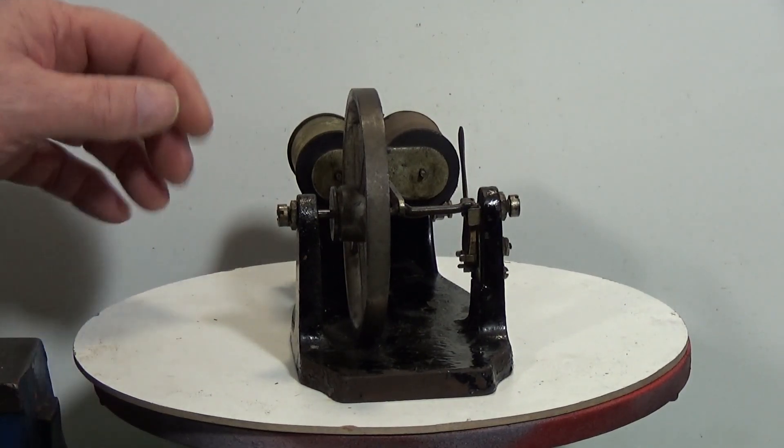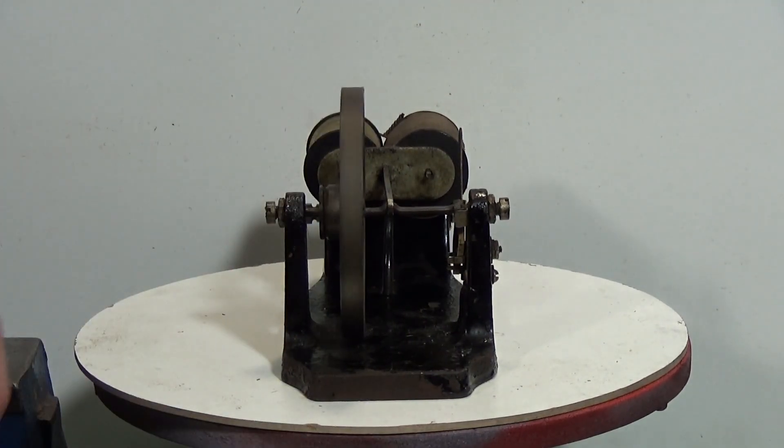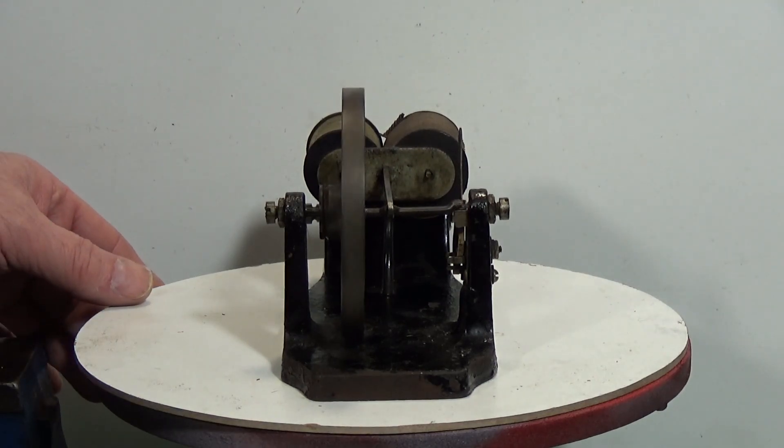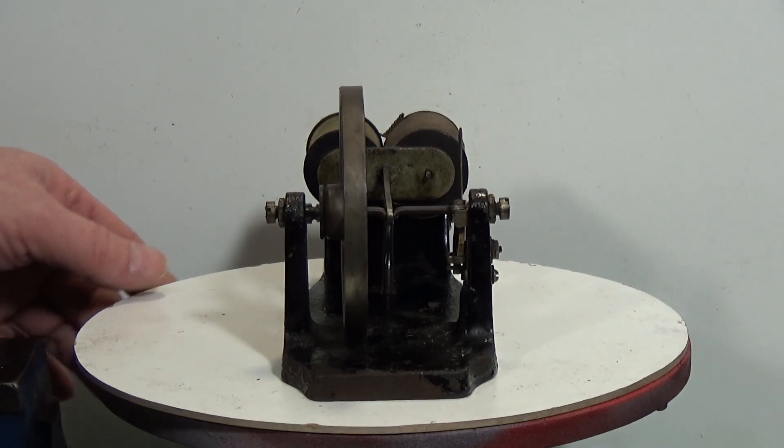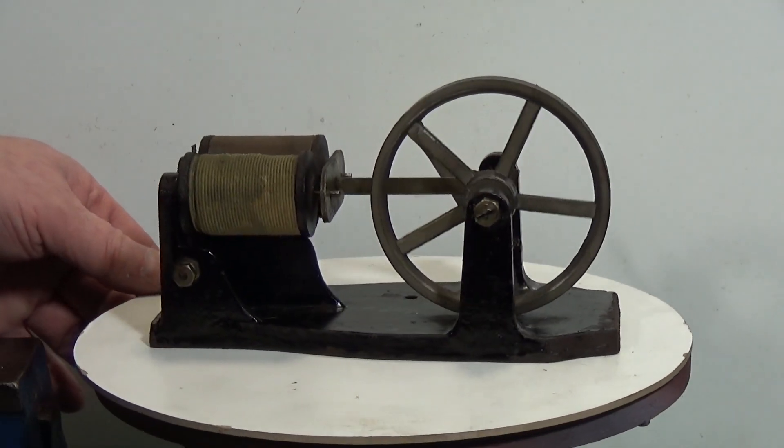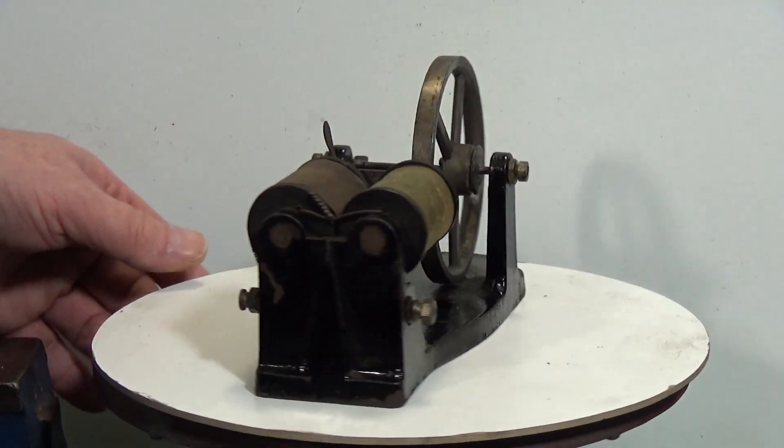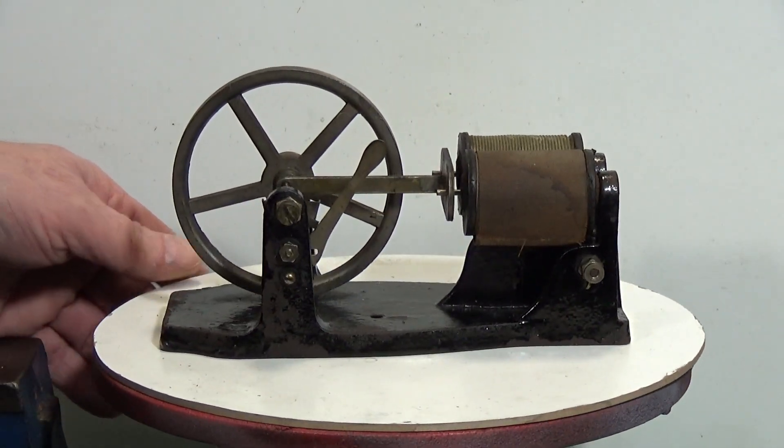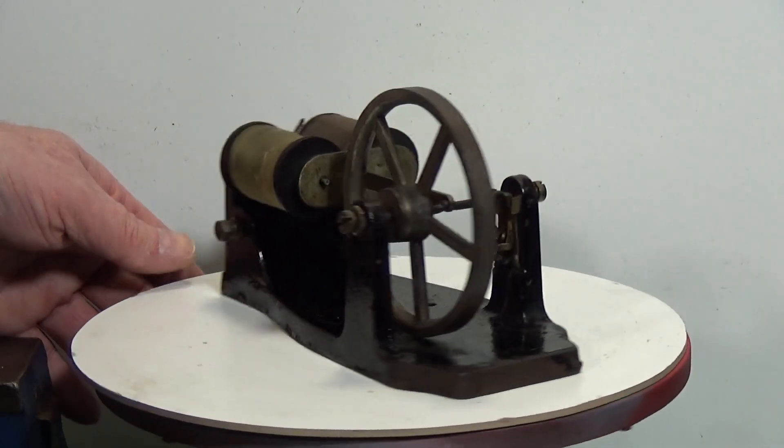These do come off occasionally on eBay. Unfortunately the flywheel got a bit bent, as you can see. It got a little bit bent on the trip over here from the states. But according to the seller this is in working order so we'll get a battery connected up to it and give it a spin.